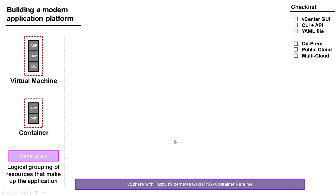At the bottom we've got vSphere with Tanzu Kubernetes Grid, which is our container runtime. I'm not going to show any hardware here because it doesn't matter whether it's physical servers in our data center or any of the cloud providers — we just treat it as resources to be consumed. This is how we achieve multi-cloud, on-premise, hybrid cloud, and multi-cloud: we don't care too much what type of hardware is underneath.